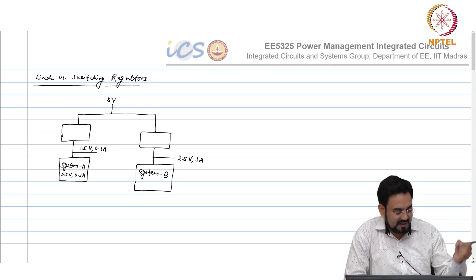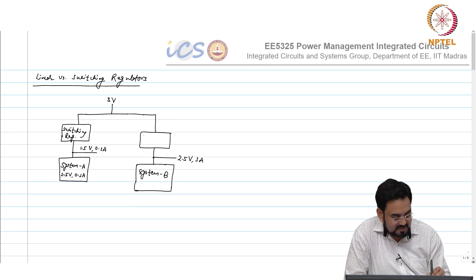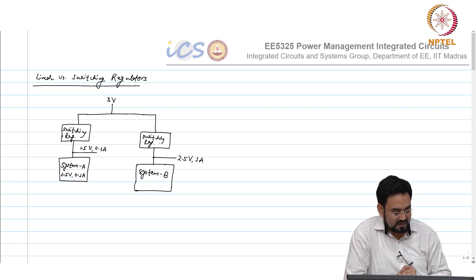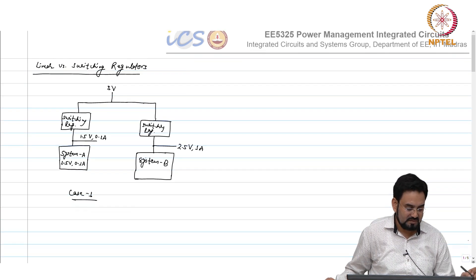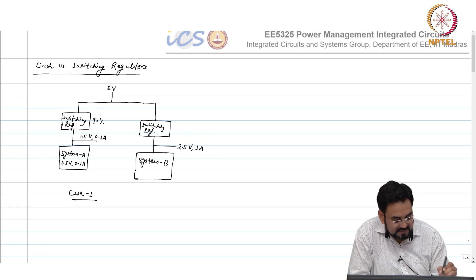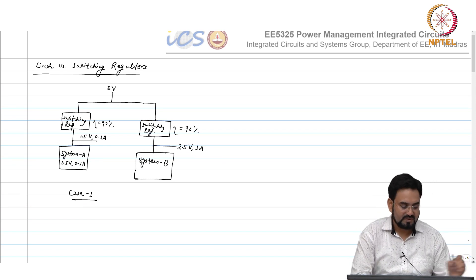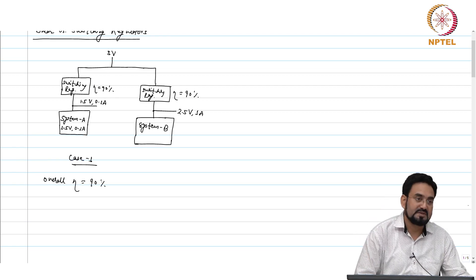Case 1: use a switching regulator for both System A and System B. Let us say efficiency is 90 percent for both cases. So the overall system efficiency will remain 90 percent.